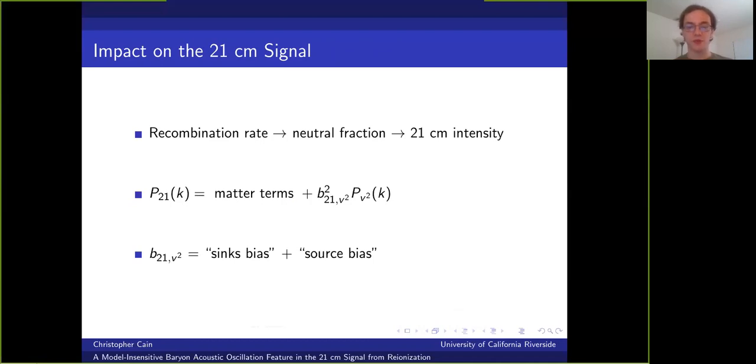A sink bias produced by the impact on the recombination rate that we just looked at, and a source bias coming from the impact of the stream velocity on photon sources.